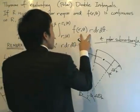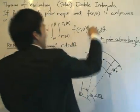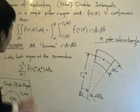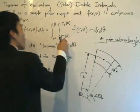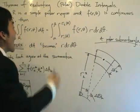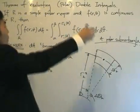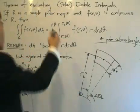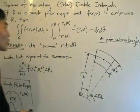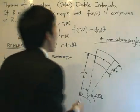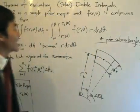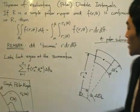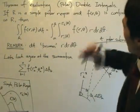We first integrate the function f(r, θ) multiplied by r — this is very important, that's the key difference. We integrate f(r, θ) times r with respect to r, holding θ fixed, putting in the limits r₁(θ) and r₂(θ). Then we integrate that entire expression with respect to θ, putting in the limits α and β. The critical difference is that we need to introduce the extra factor r inside.